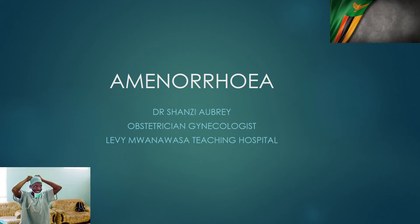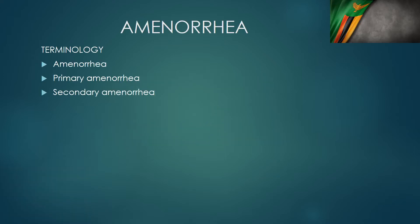Hello everyone. In the next 12 minutes, I want to take you through amenorrhea. This is not a small task, but let's start. Amenorrhea, by definition, is absence of menses for three months in somebody that has been having regular menses, and also it's defined as absence of menses for six months in somebody that has been having irregular menses. So that's how amenorrhea is defined.